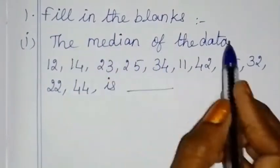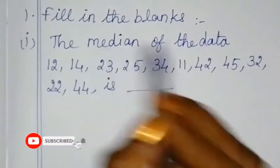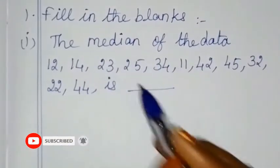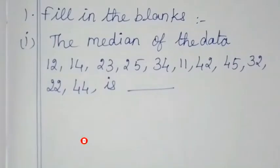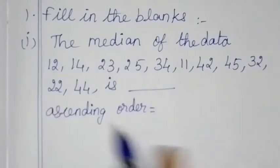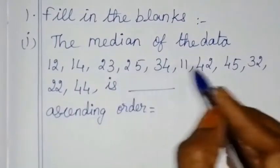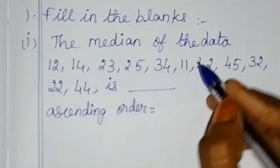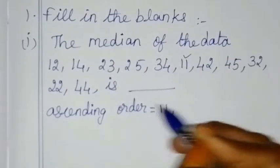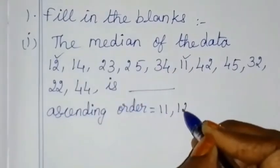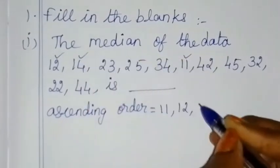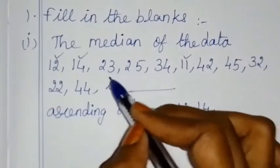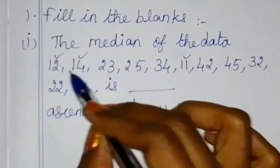First sum: find the median of the data. To find the median, we arrange the data in ascending order — from smallest to largest. The smallest number is 11, 12, 12, 14, 20, 30. There are 10 terms.